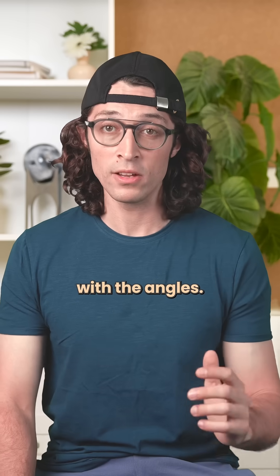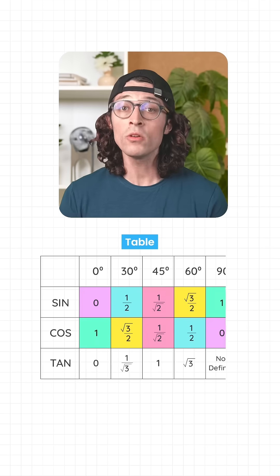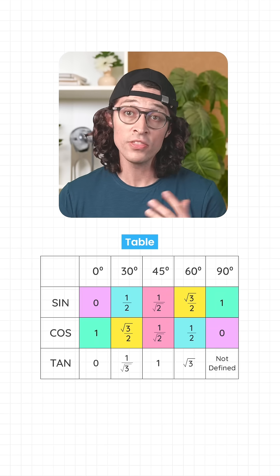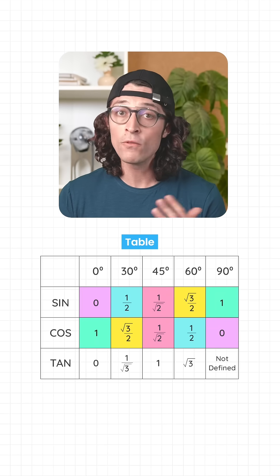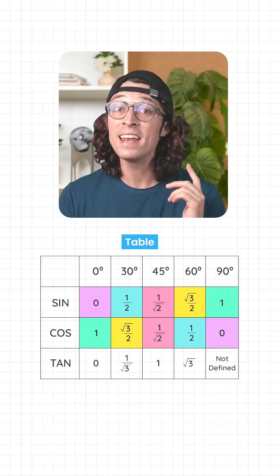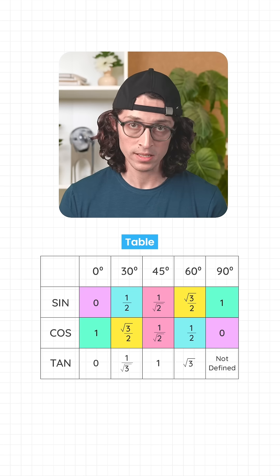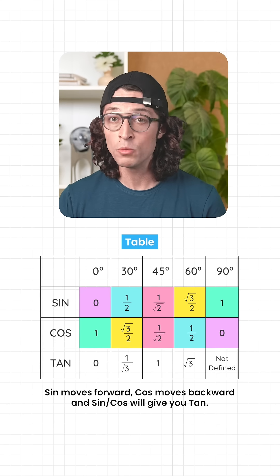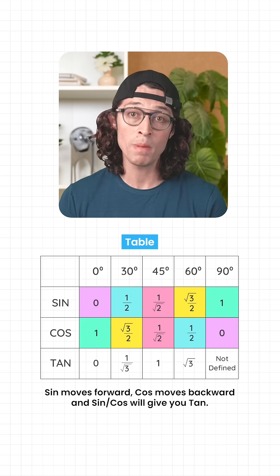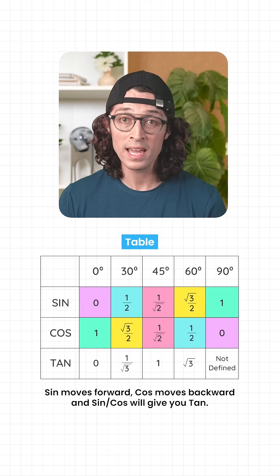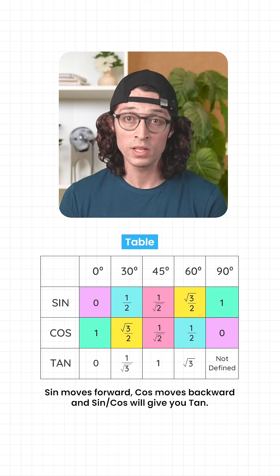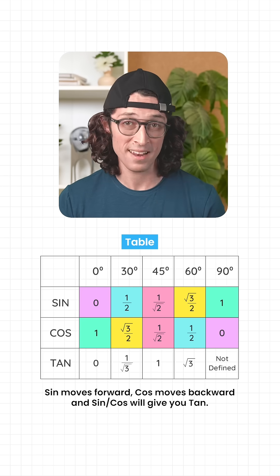Now, label a table with the angles. Start with 0 degrees, then 30, then 45, 60, and then 90 degrees. Sine moves forward, cosine moves backward, and sine divided by cosine will give you tangent.